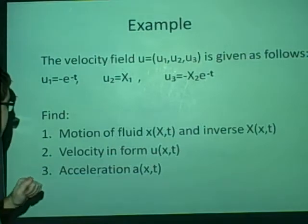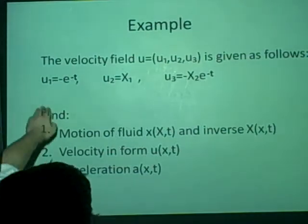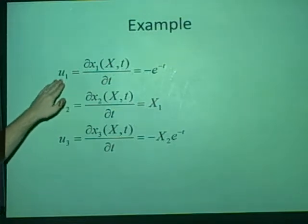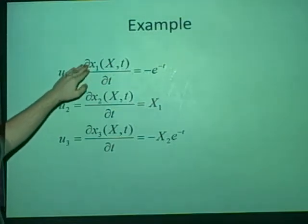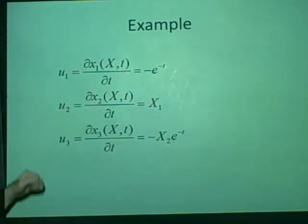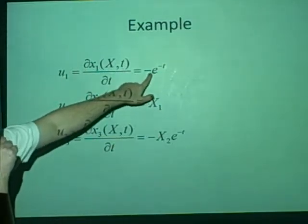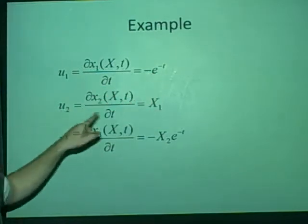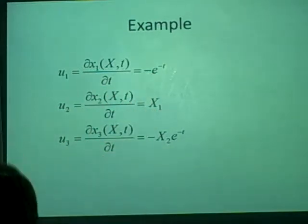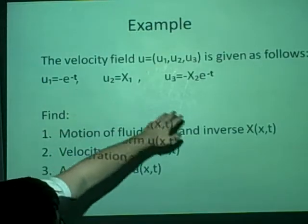Now the first thing we can notice is that this is all velocity. And the velocity formula, as we know it, is here. So we've got u1, partial dx1, all here. This is just as the definition, and we're given that u1 is minus e to the minus t, and that u2 is X1, u3 is minus X2 e to the minus t from here.